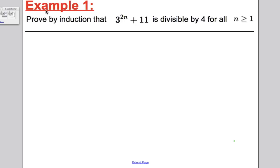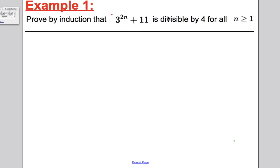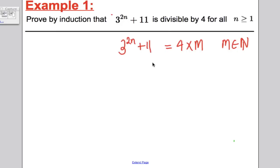Let's start straight away with an example — the one given in the scheme of work. We want to prove by induction that 3 to the power of 2n plus 11 is divisible by 4 for all n ≥ 1. A quick point: if something is divisible by 4, it must be in the 4 times table, so it can be written as 4 times some whole number m. So this expression being divisible by 4 is the same as saying 3^(2n) + 11 = 4m for some whole number m.